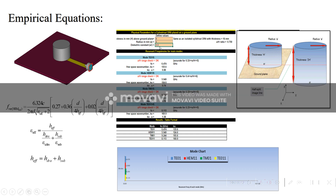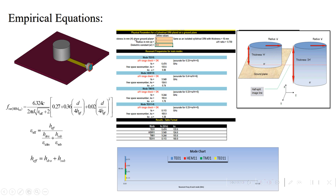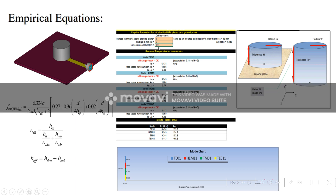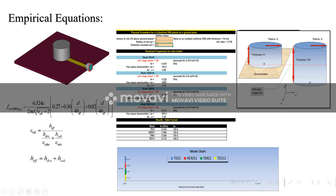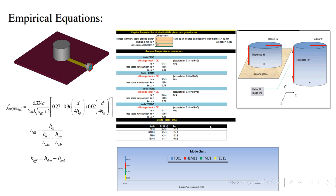The Excel sheet covers different modes: TE, HEM, TM, and TE011 modes. It takes inputs — height of the DR, radius of the DR, and dielectric constant of the DR. I have taken alumina material for the dielectric resonator with permittivity of 9.9 and loss tangent of 0.001. After feeding these inputs, we can easily get the resonant frequency for different modes. For HEM mode, F0 is 5.9 GHz.